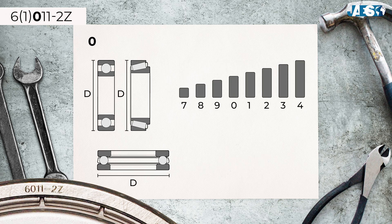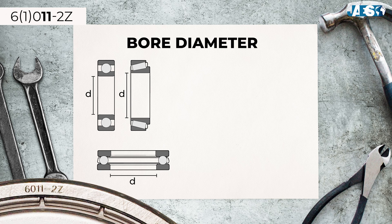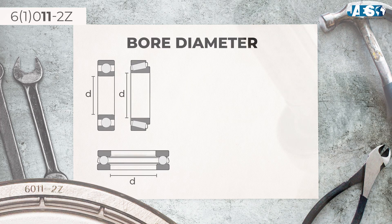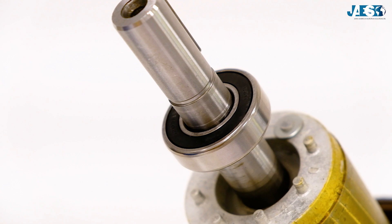The third digit identifies the bearing diameter, dimension D. The diameter series are numbered 7, 8, 9, 0, 1, 2, 3, and 4 in ascending order of outside diameter. As can be seen, these boundary dimensions are numbers that do not correspond to actual quantities, but are standardized dimensions based on the diameter of the inner bearing bore — the only measure expressed. In fact, the last number symbolizes the diameter of the bearing bore, i.e., the inner diameter of the inner ring. This information is fundamental, as it is the dimension that must be adapted to the shaft to which it will be connected.